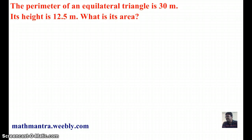According to our question, we are given the perimeter of an equilateral triangle as 30 meters, its height as 12.5 meters, and we are supposed to find out its area.